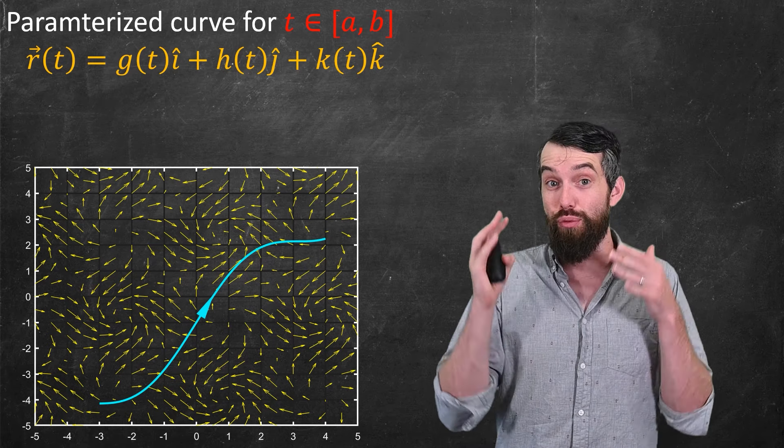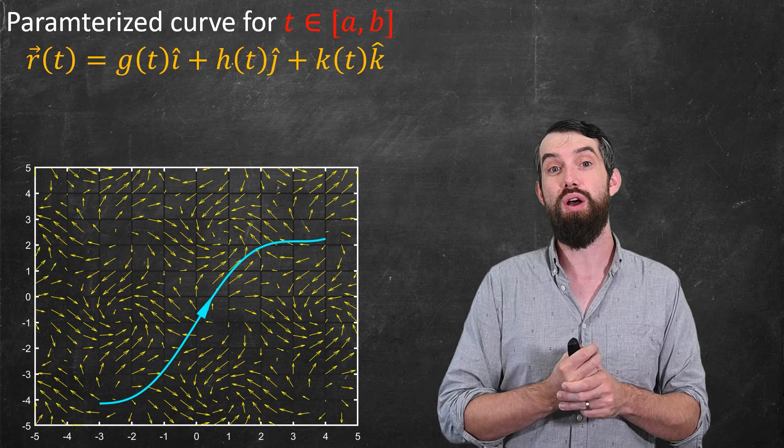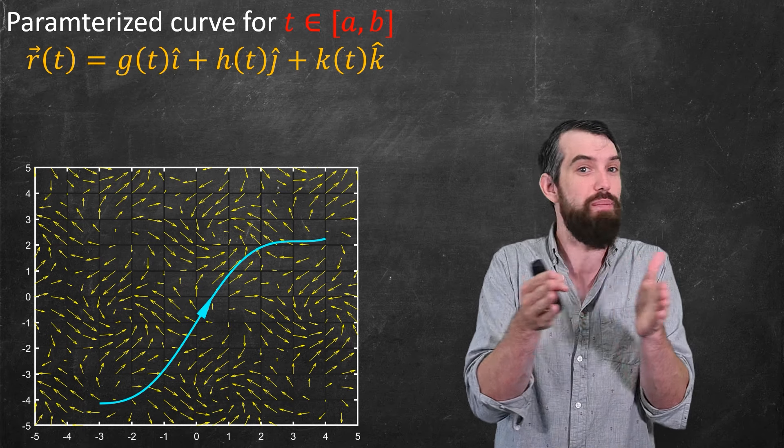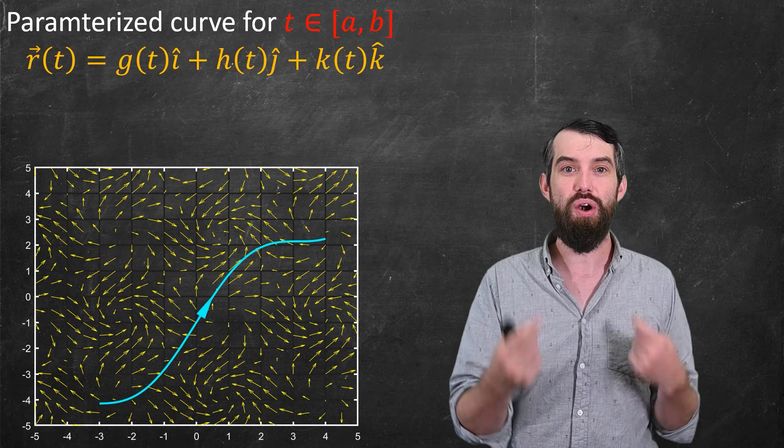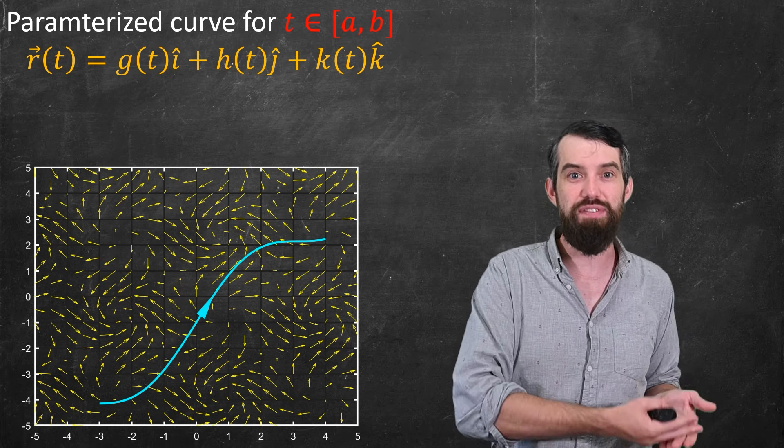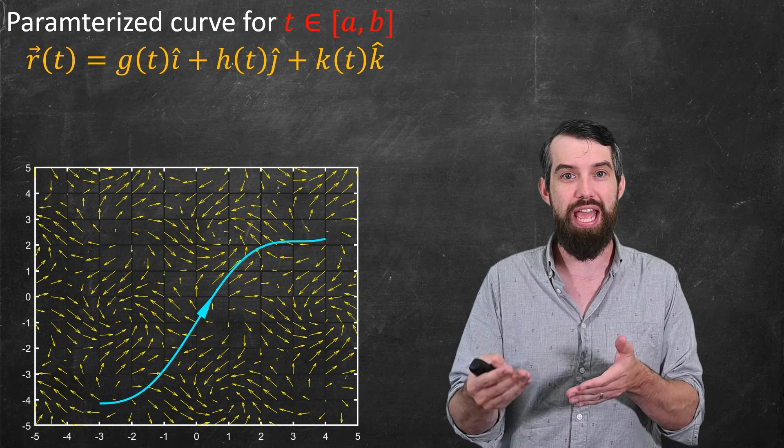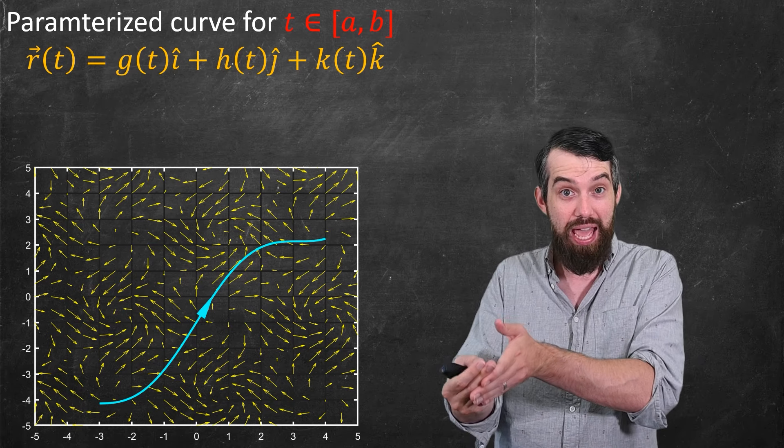Okay, so let's give some labels. I'm going to say I have a parameterized curve. The curve is on some interval of t, t between a and b, and then the curve is going to be a g of t in the i-hat, an h of t in the j-hat, and a k of t in the k-hat.